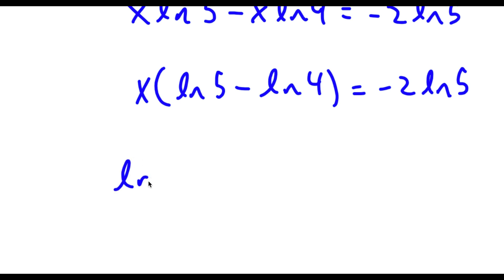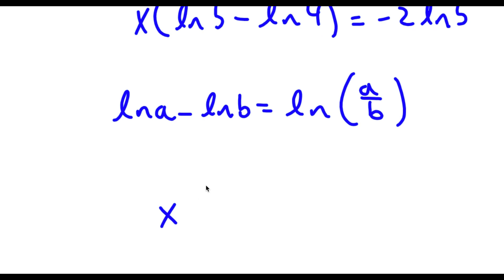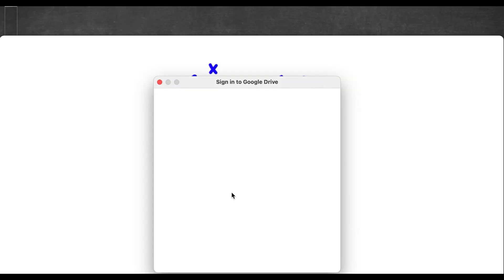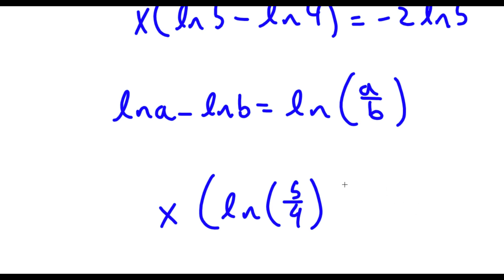Now if I have something in the form ln a minus ln b, this is the same thing as ln of a over b. So ln 5 minus ln 4 equals ln of 5 over 4. So I have x times ln(5/4) is equal to negative 2 times ln 5.